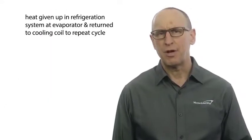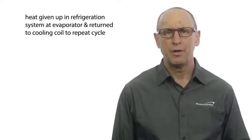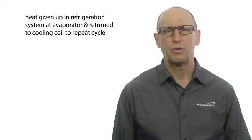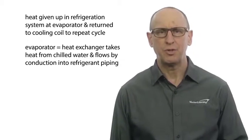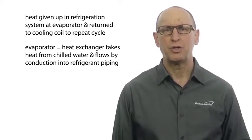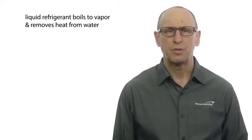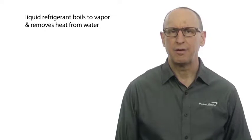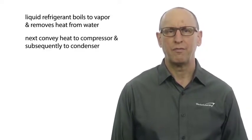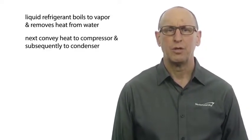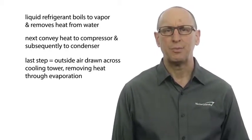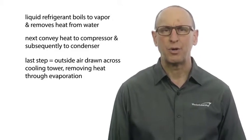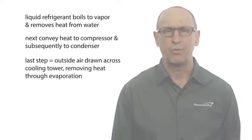The heat is given up in the refrigeration system at the evaporator and returned to the cooling coil to repeat the cycle. The evaporator is a heat exchanger that takes heat from the chilled water and then flows by conduction into refrigerant piping. The liquid refrigerant in the tubes boils to a vapor and removes the heat from the water to convey the heat to the compressor and subsequently to the condenser. The last step is for outside air to be drawn across a cooling tower, thus removing the heat from the water through evaporation.